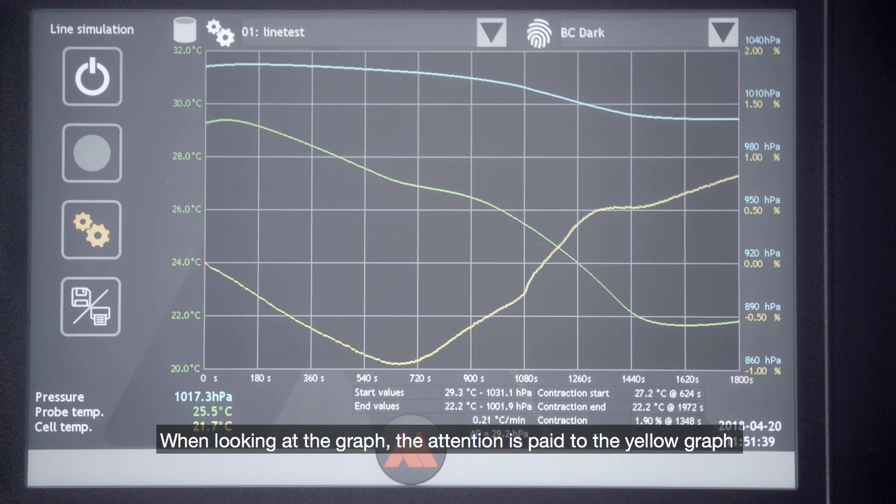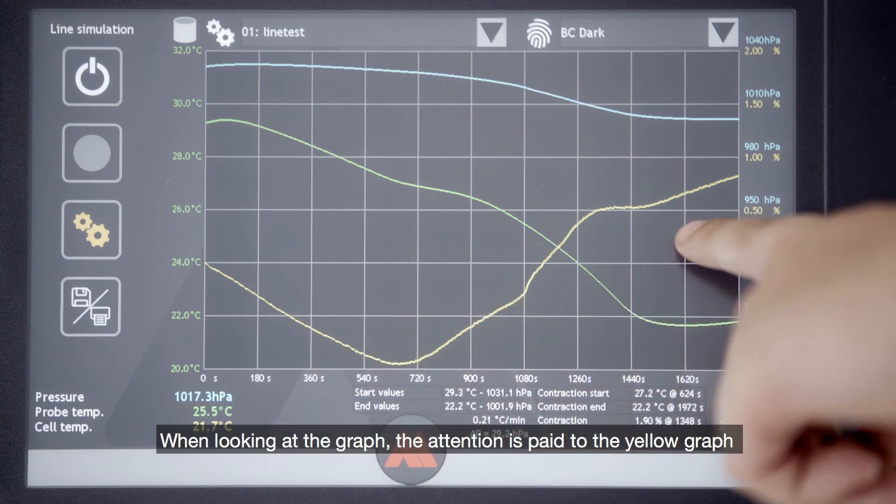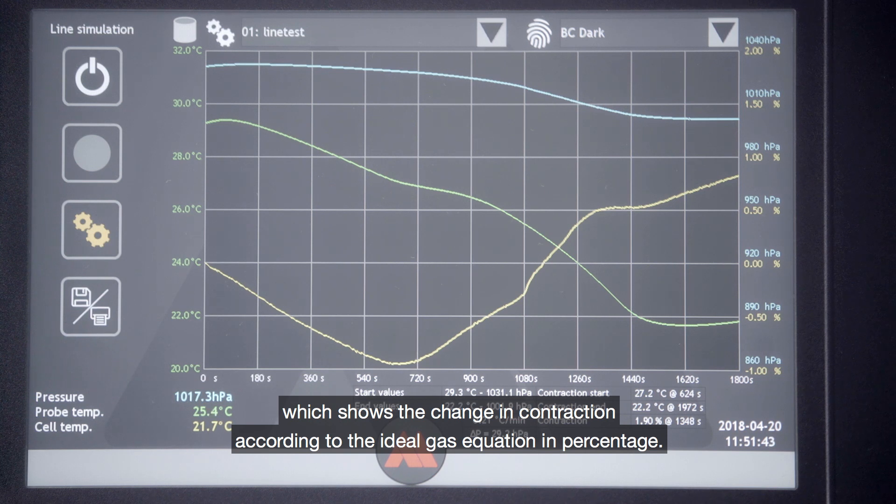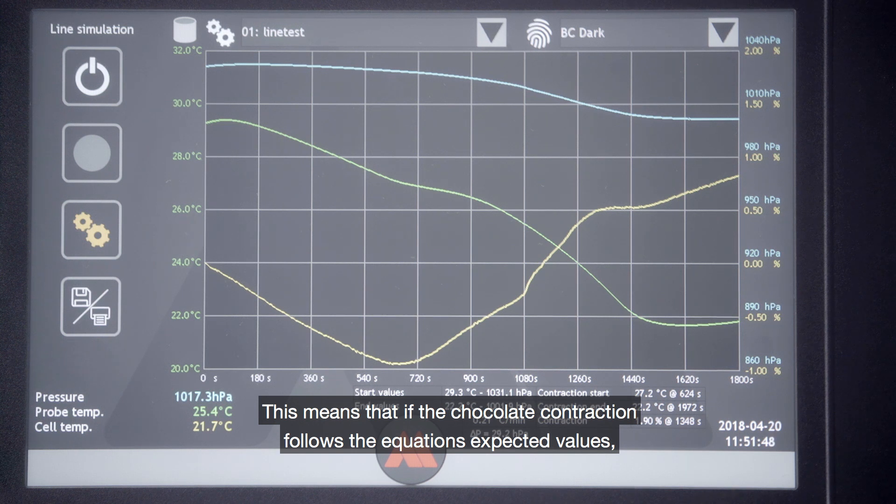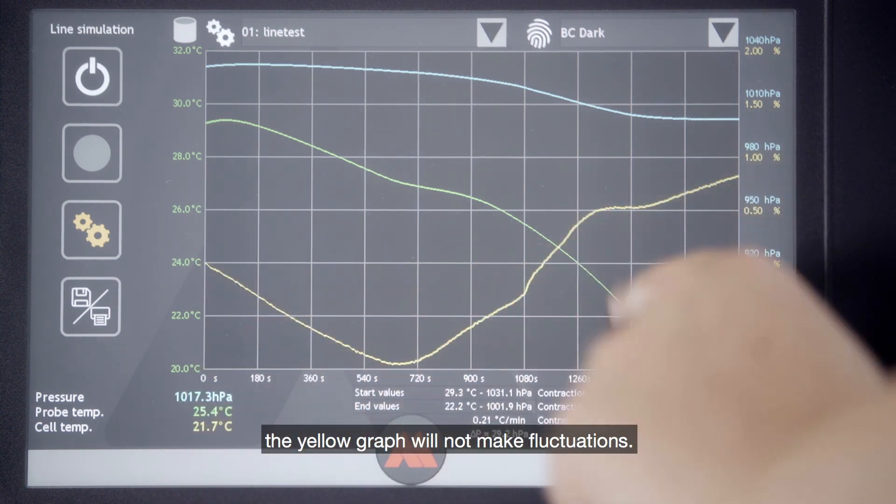When looking at the graph, attention is paid to the yellow graph which shows the change in contraction according to the ideal gas equation in percentage. This means that if the chocolate contraction follows the equation's expected values, the yellow graph will not make fluctuations.